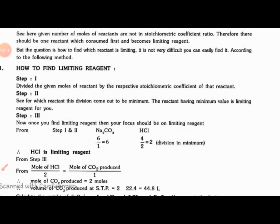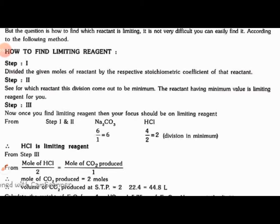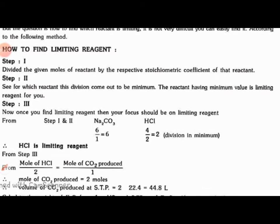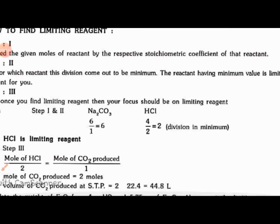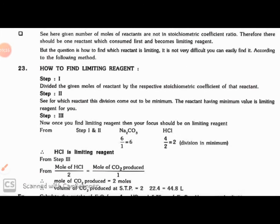From Step 1 and 2: Sodium carbonate is six upon one equals six moles. HCl is four by two equals two. Division is minimum. The minimum is four by two equals two, so HCl is the limiting reagent.